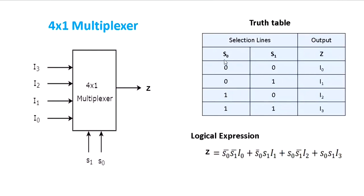With 2 selection lines, there are four combinations. First combination: s0 = 0 and s1 = 0, output z = i0. Second combination: s1 = 0 and s0 = 1, output z = i1. Third combination: s0 = 1, s1 = 0, output z = i2. Fourth combination: s0 = 1 and s1 = 1, output z = i3.